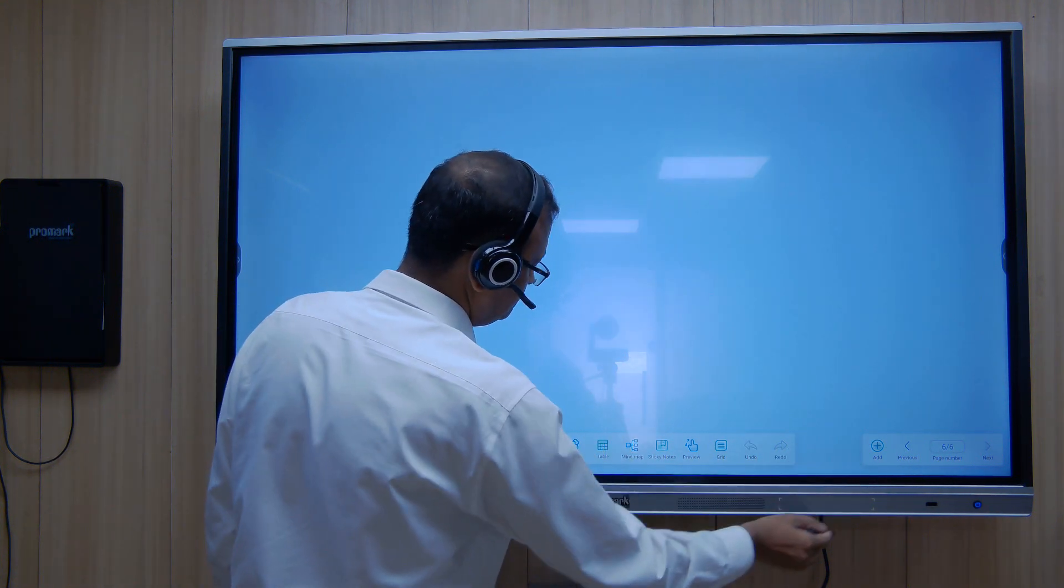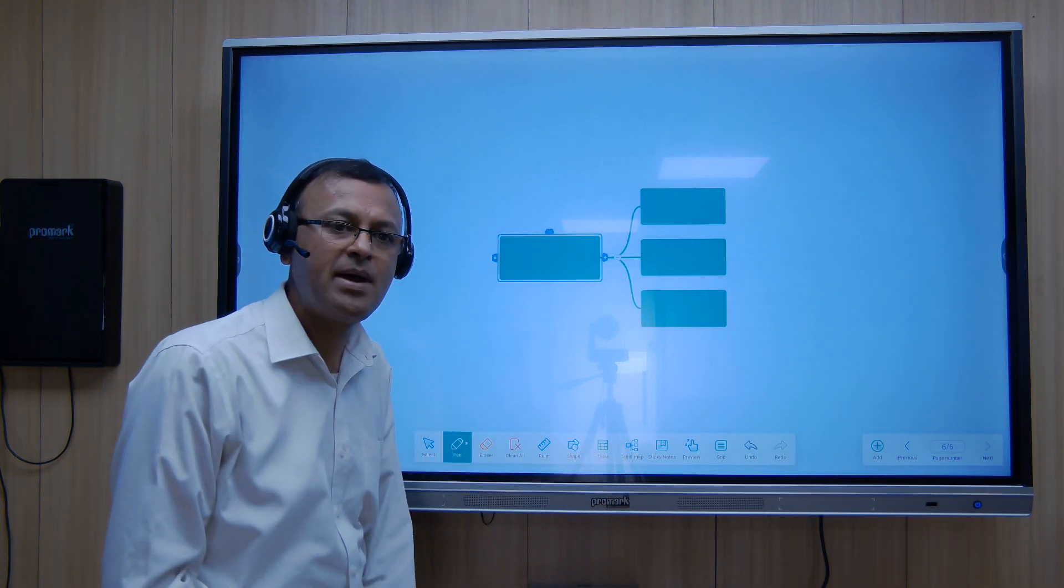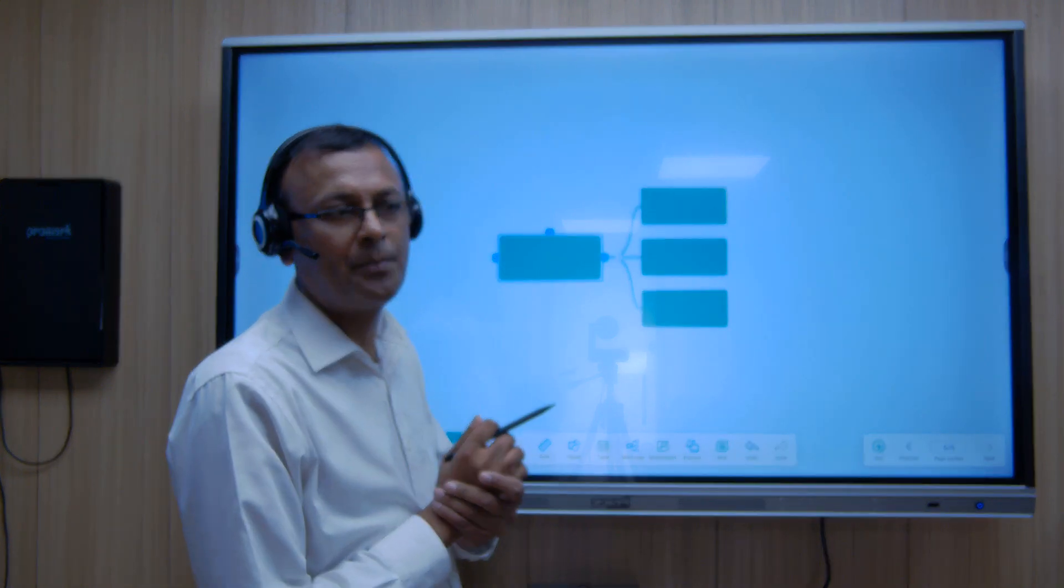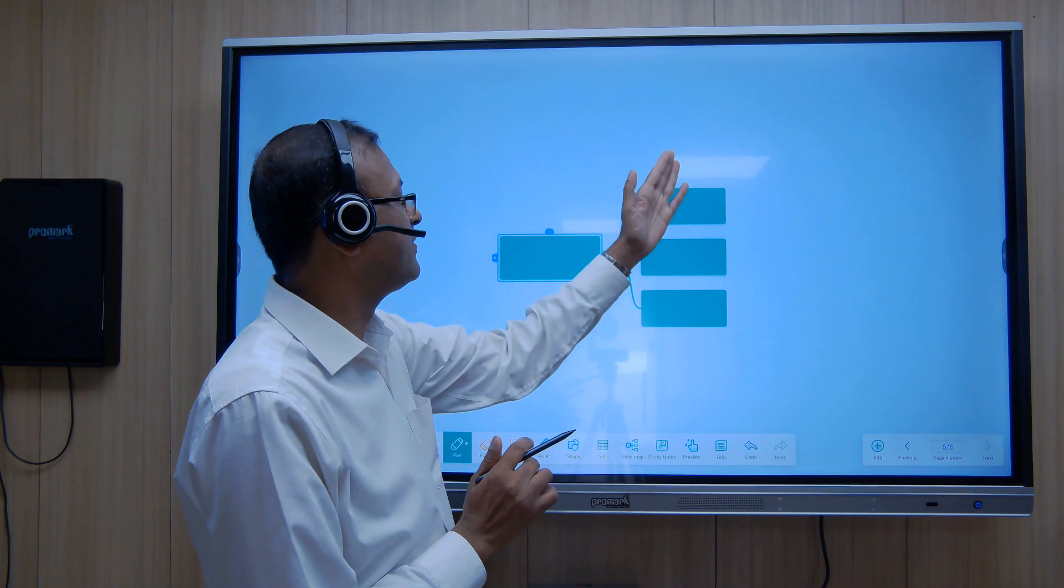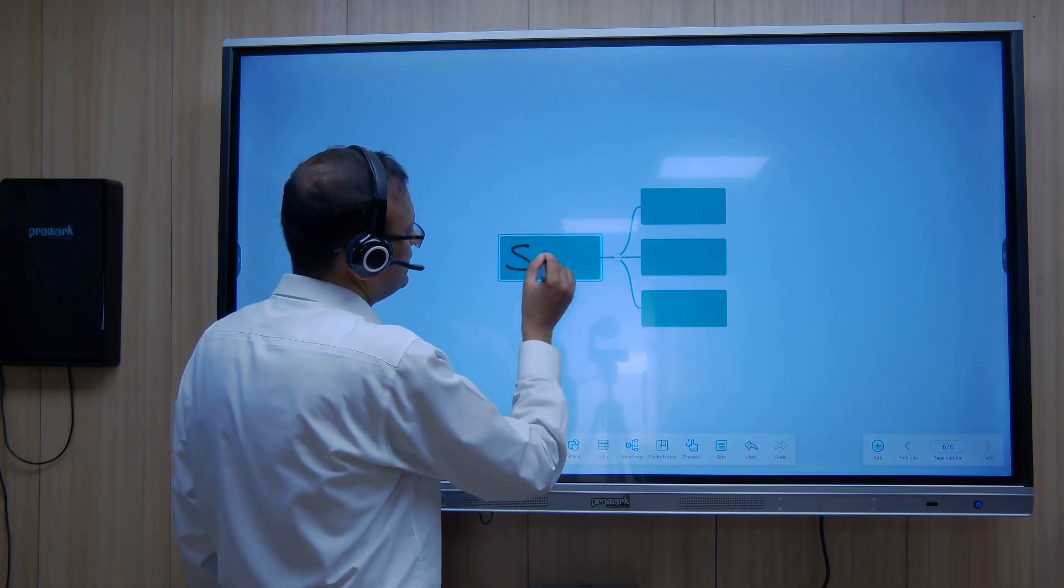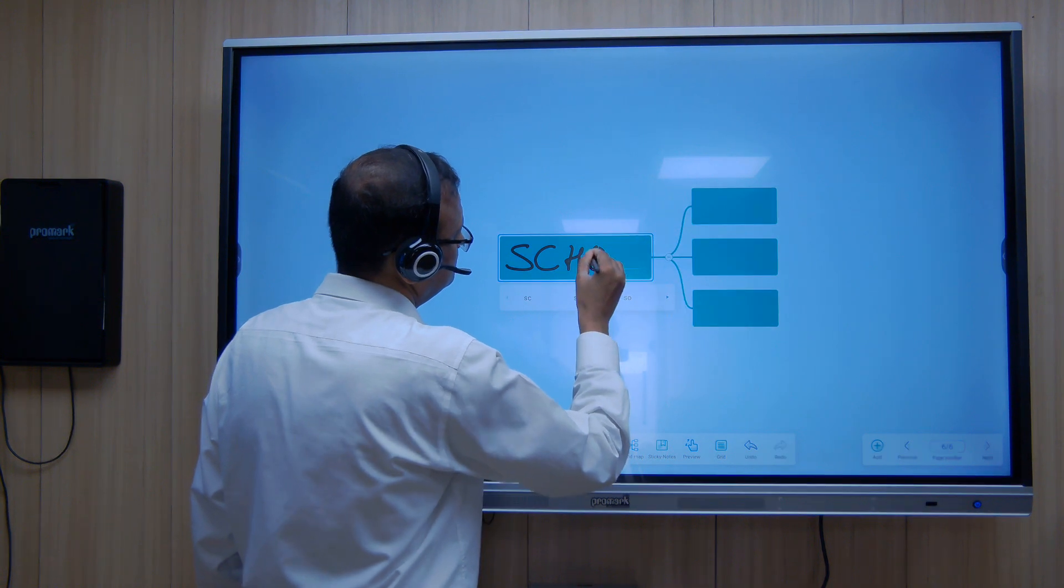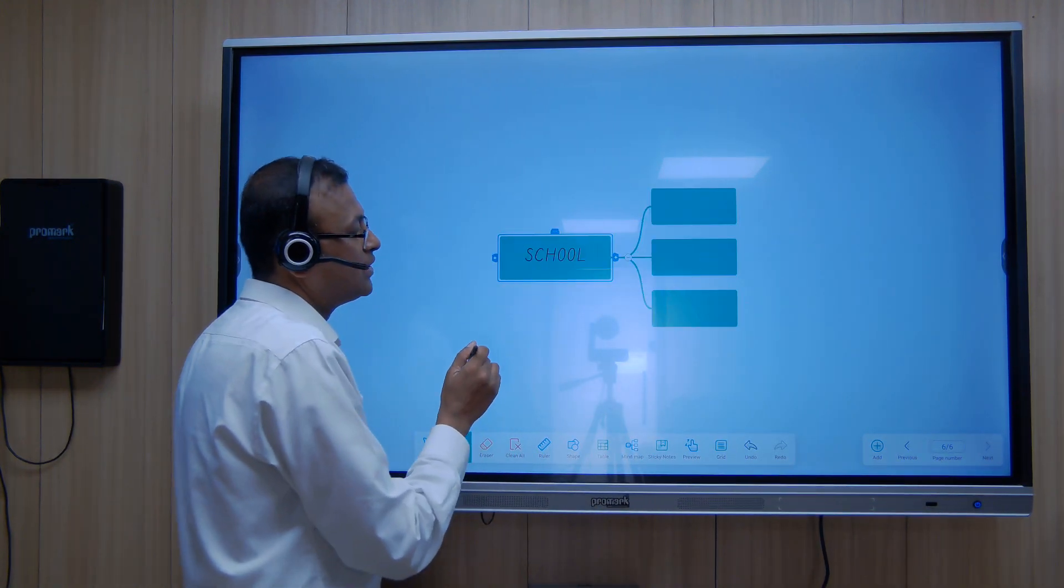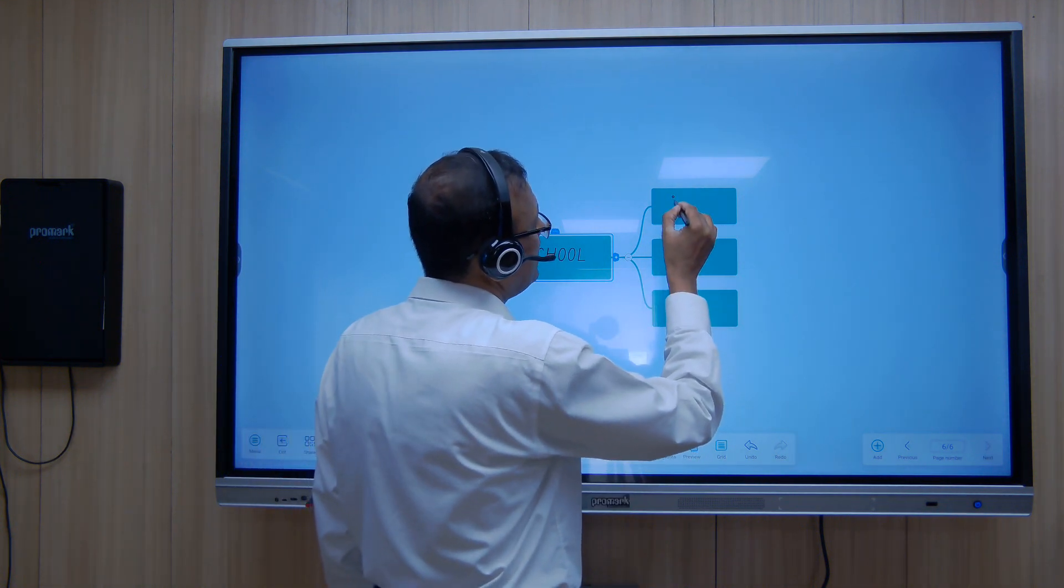And then we also have something called the mind map or a cluster diagram. Here, if you want to do some topic we can bifurcate into different points. We can write, for example, if you want to write school, we get it in a type format. And then we have subjects, let's say maths.